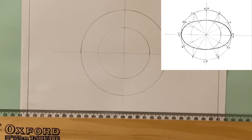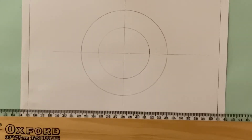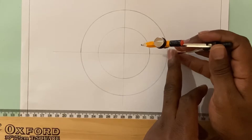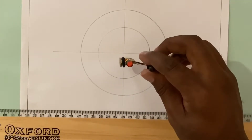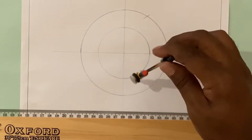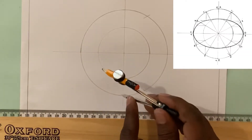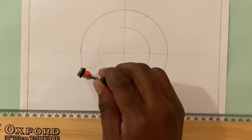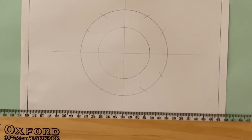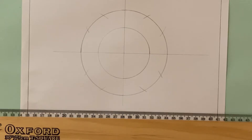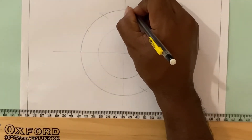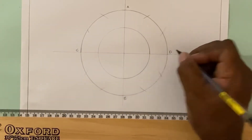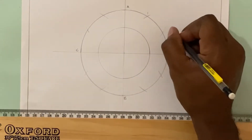Now I have my two circles. Next, I want to divide the larger circle, which represents the major axis, into 12 equal parts. I'll set my compass to the radius of my circle and scribe an arc on each side, going to each one of the quadrant points and scribing an arc on the circle. Let me label these points: point A, point B, point C, and point D. Now I'm going to label the numbered points one, two, and so on.